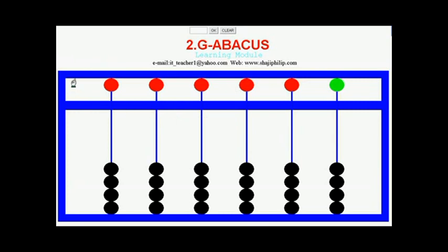The beads on the top row are called heaven beads, and the ones at the bottom are called earth beads. There are four earth beads on each rod or beam.